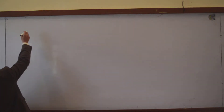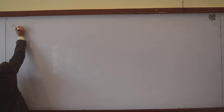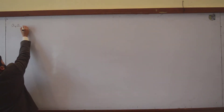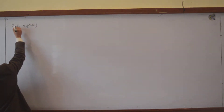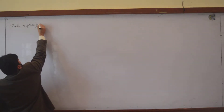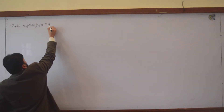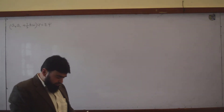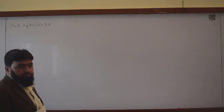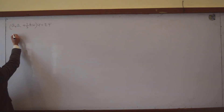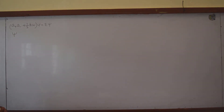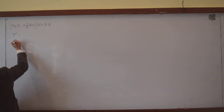We wrote that (a₊a₋ + ½ℏω) applied on ψ gives you E times ψ. Now here is a crucial step. You know, in the Schrödinger wave equation, ψ is the solution of the Schrödinger wave equation.